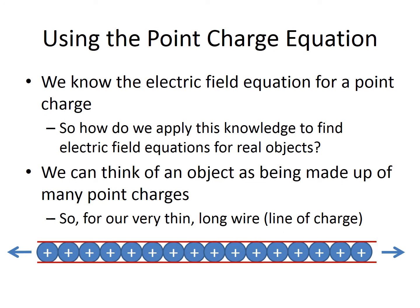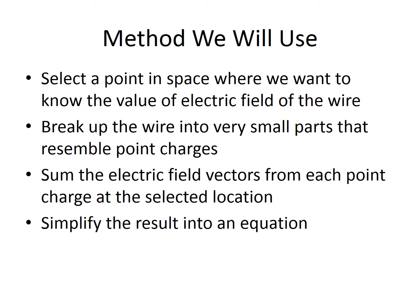So how are we going to use this point charge equation for more complex objects? What we're going to do is think of this object as being made up of many — an infinite number of — point charges. For our very thin, long wire, we think of it as a line of charge: a single-thickness line of positive charge going off to negative and positive infinity. We'll select a point in space, break the wire into very small parts that resemble point charges, calculate the electric field of each part, and then integrate to derive an equation for the electric field of the wire.